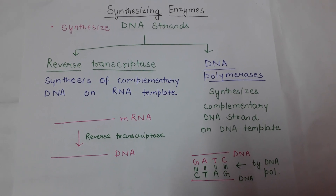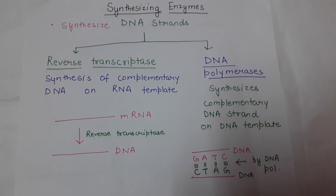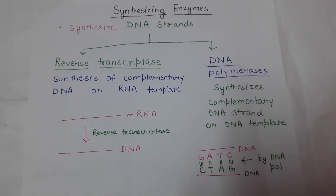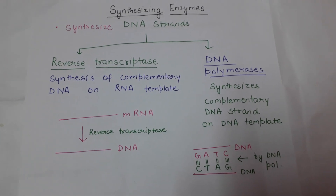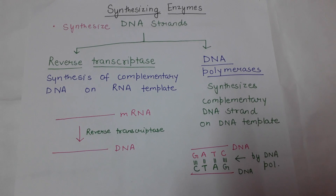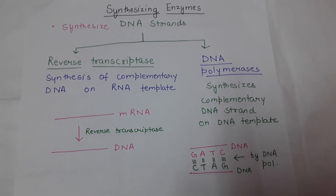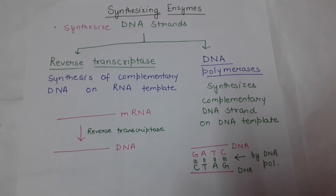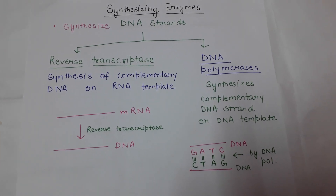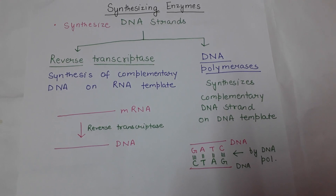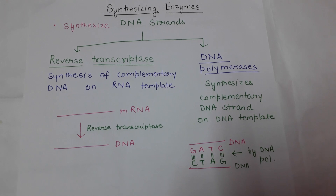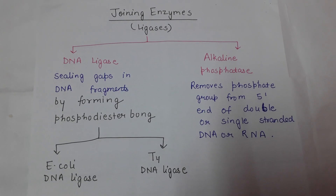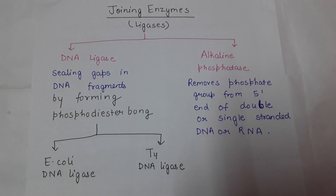Another category of enzymes is synthesizing enzymes, which synthesize DNA strands. There are two types: reverse transcriptase, which synthesizes DNA from mRNA and is used in forming cDNA libraries, and DNA polymerase, which catalyzes the synthesis of a DNA strand from a template strand using nucleotides.